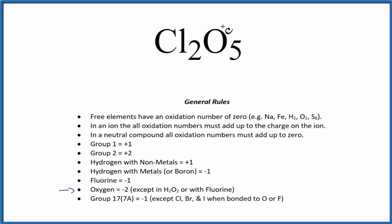So each one of these oxygens will have an oxidation number of minus two. We also know that in a neutral compound, all the oxidation numbers have to add up to zero.